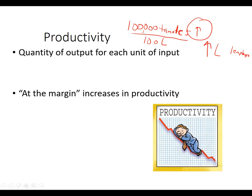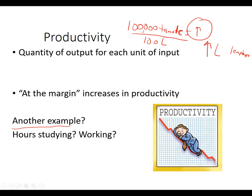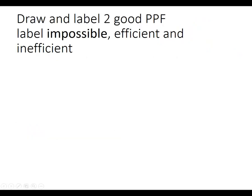Think about marginal changes and additional increases. You can use this to start thinking about your paper — how could your firm, or the firm you want to work at or start, increase productivity? In the chapter, you've read about the production possibility frontier. We often use the guns and butter example.